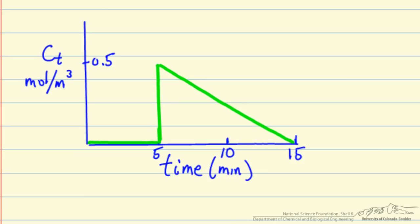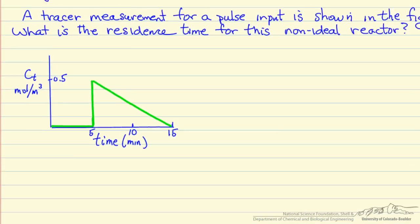But we can measure concentration as a function of time, and then we can use this to calculate the residence time distribution, which is essentially taking this concentration time plot and normalizing it.